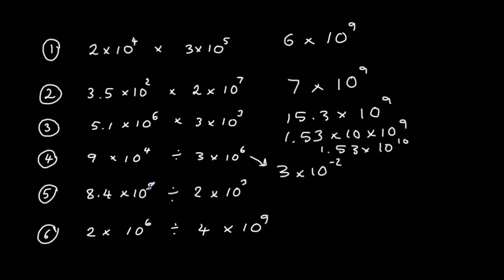Number 5: we've got 8.4 divided by 2, that's 4.2. And we've got 10 to the power of 5 divided by 10 to the power of 3, which is 10 to the power of 2. So the answer is 4.2 times 10 to the power of 2.